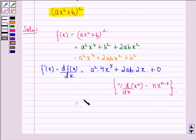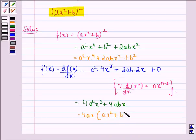This is equal to 4a²x³ + 4abx. Now from both the terms we can take 4ax common and we have ax² + b.